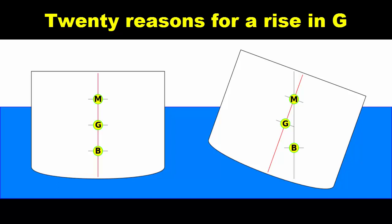Hi everyone. Today I will tell you 20 reasons for a rise in center of gravity G. When the vertical center of gravity G rises, there will normally be a loss in the ship's stability. G may even rise above the transverse metacenter M to make the ship unstable. The master and mate on board ship must be aware of changes in a ship that would cause such a rise in G. The following list gives reasons for such a rise.